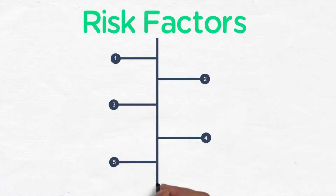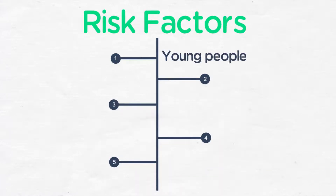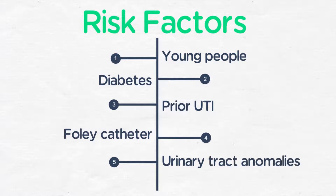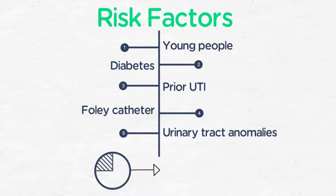Risk factors for UTI and acute pyelonephritis include young age, particularly infants, as well as patients with diabetes mellitus, prior UTI, Foley catheter or urinary tract anomalies, including vesicoureteral reflux. UTIs are more common in women compared to men.